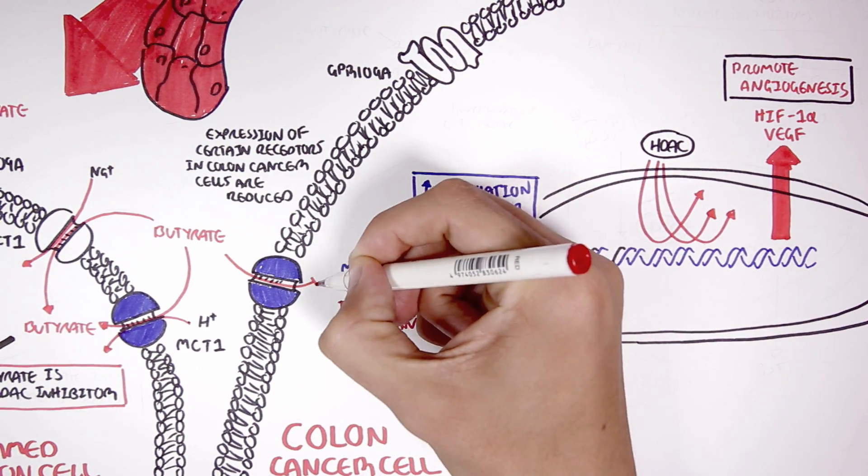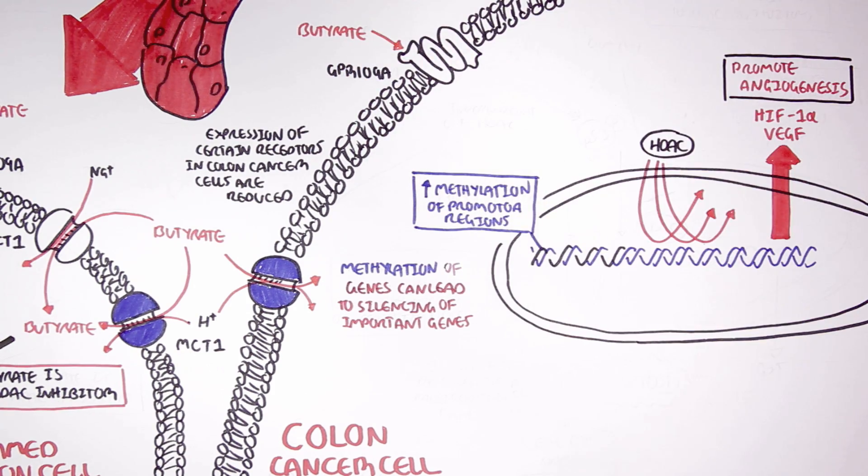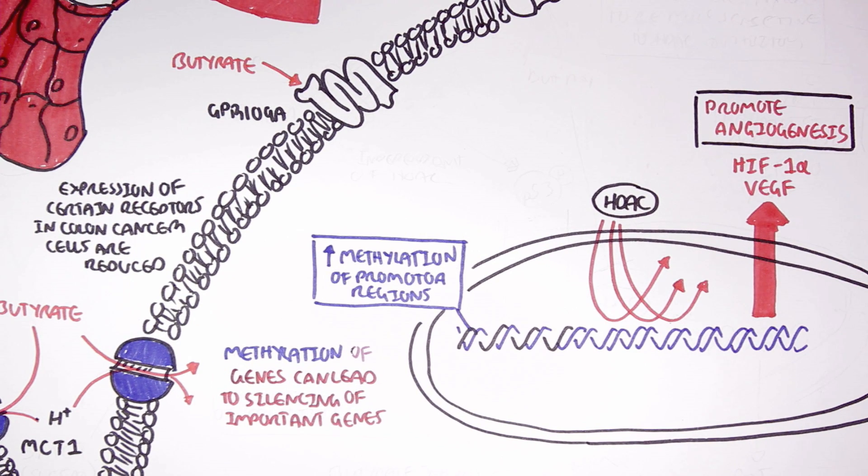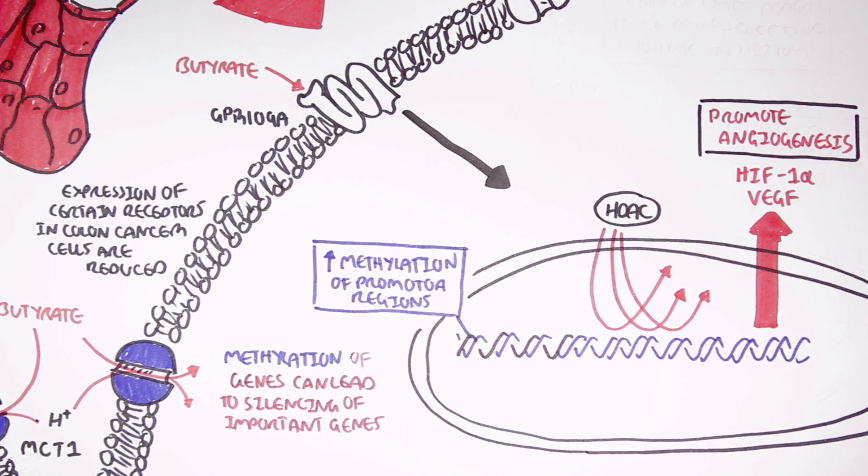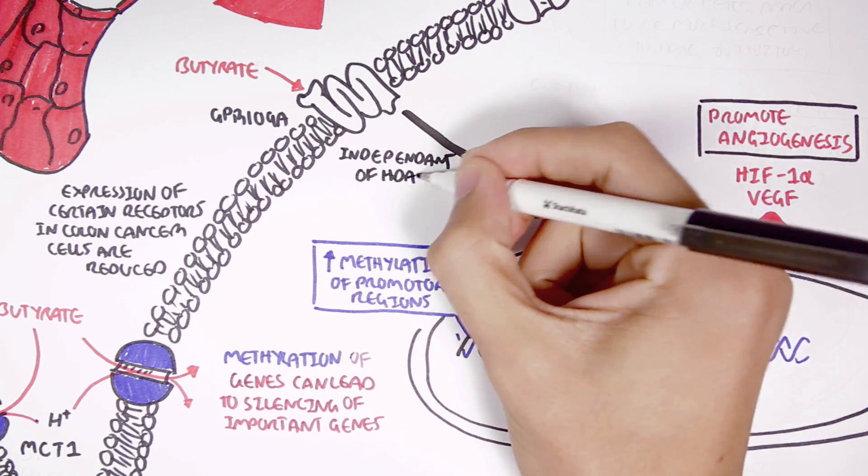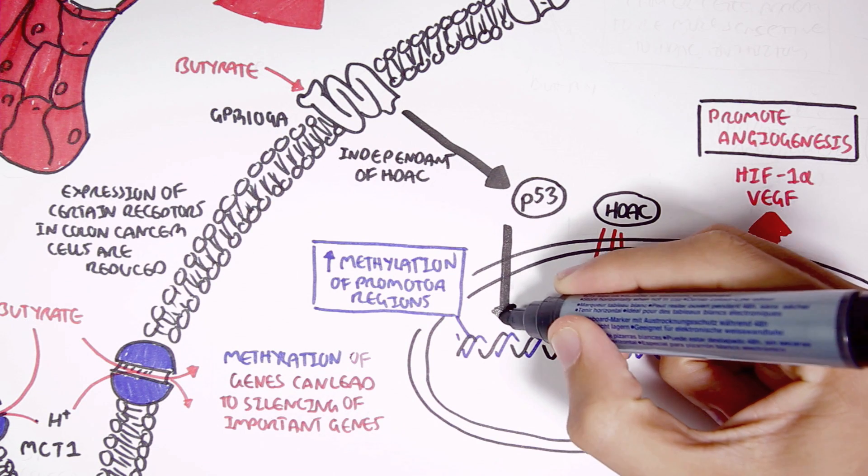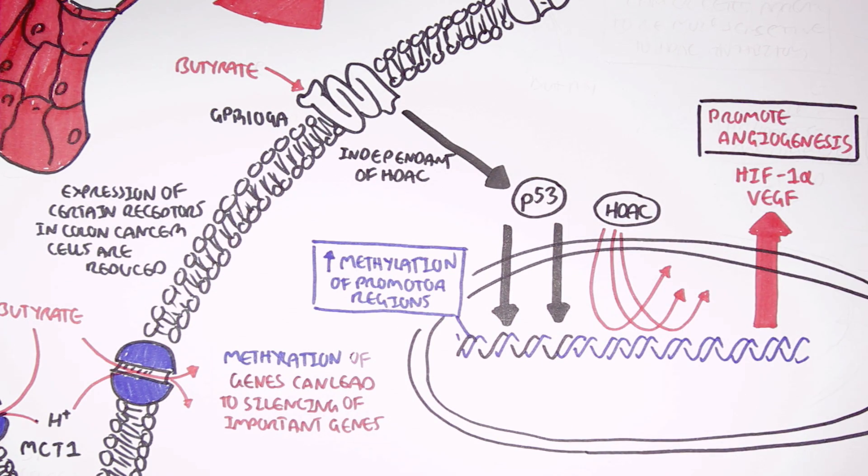Now, butyrate can enter the cell or activate the G-protein receptor 109A, if the channels and receptors are expressed. By activating the G-protein receptor 109A, butyrate can activate P53, independent of the histone deacetylase.